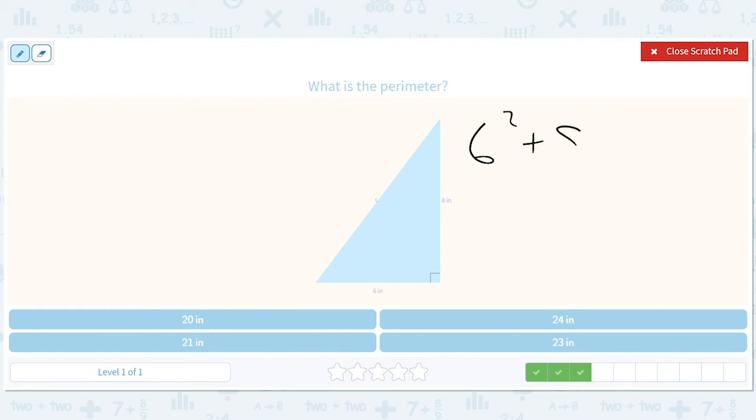So we could tell that that's 10. But let's do the Pythagorean theorem. We get 6 squared plus 8 squared equals 36 plus 64 equals 100. And the square root of 100 is 10. It's nice to see that the formula works out. It's good practice.